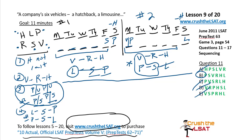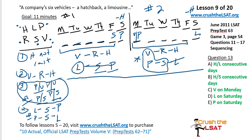Let's go to question 13. If neither P nor L is serviced on Monday, which of the following must be true? In scenario one, P is already on Saturday. If L is not on Monday, V must be on Monday. In scenario two, L is on Saturday. If P can't be served on Monday, again V must be served. No need to write anything down — just look at the diagram. Answer C.